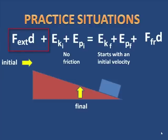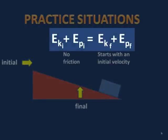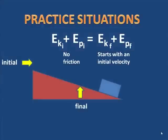Again, there isn't any external work being done, so we don't need that. But there is kinetic and potential at the beginning, and there's kinetic and potential at the end. There is no friction, so there isn't any work against friction. The energy is conserved: the initial kinetic plus potential is converted to the final kinetic plus potential.